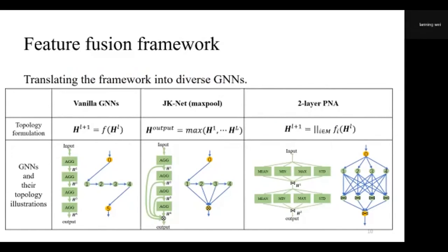The feature-fusing framework can unify existing topology designs, so we can translate the framework into diverse GNNs. For example, vanilla GNNs use the stacking manner directly. In the feature-fusing perspective, the feature matrix H in layer L+1 is generated based on the previous layer L directly. Based on this method, the topology design of GCNNet can be obtained with a set of skip connections and the max pooling operation. The GNNs and topology illustrations are shown here. The PNA method is designed by placing four aggregations in parallel and then concatenating the results, and the topology can be illustrated on the right.